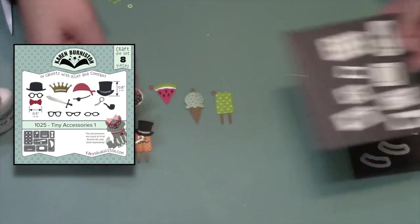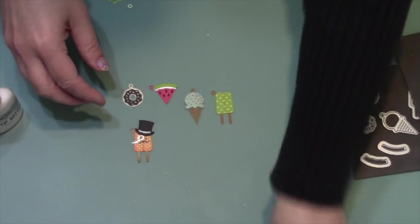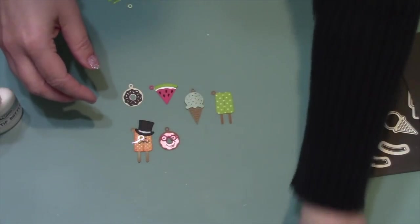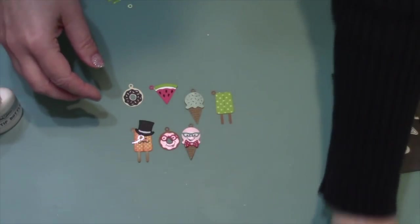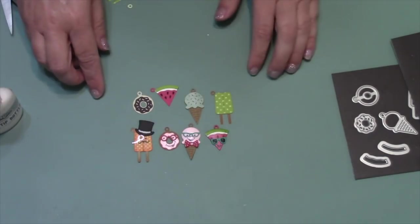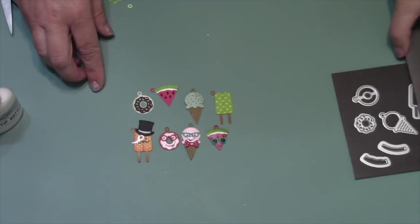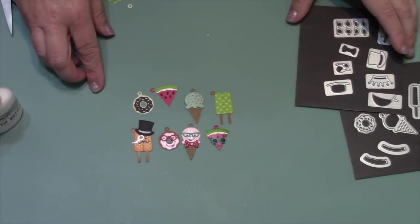Those were done with Tiny Accessories 1, and I stuck with Tiny Accessories 1 for the other three charms in that first set. I just added glasses and bow ties, and when I needed face parts like eyes and mouths, I just drew them on with a black pen.